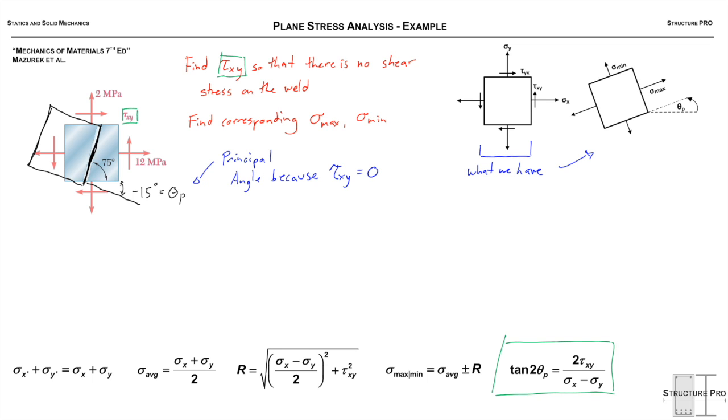We're going to use our formula for the principal angle: tan(2θ_p), which is negative 15 degrees, equals 2 times the shear stress divided by the difference in normal stresses.